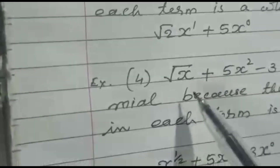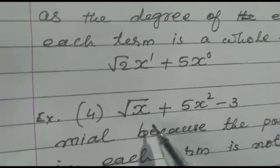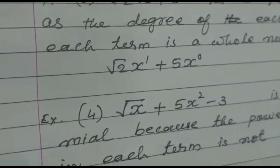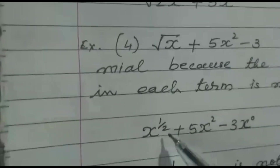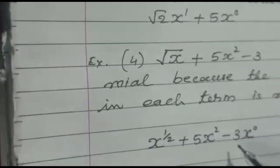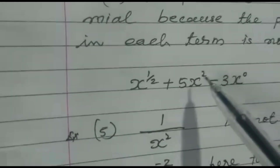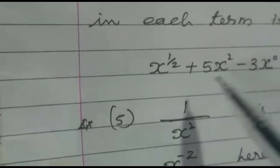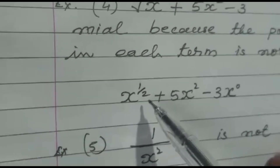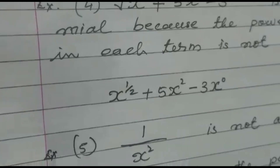Now the fourth example: √x + 5x² - 3. To find out whether it is a polynomial or not, we examine the power of the variables in each term. The first term √x is written as x^(1/2); the second term is 5x²; and -3 is written as -3·x⁰. When we examine the powers — 0, 2, and 1/2 — they are not all whole numbers because 1/2 is not a whole number. Therefore it does not satisfy the definition of a polynomial, so it is not a polynomial.